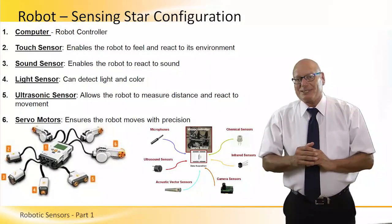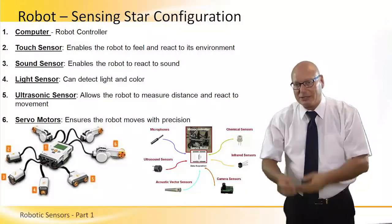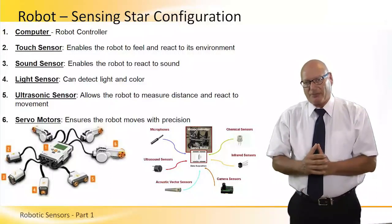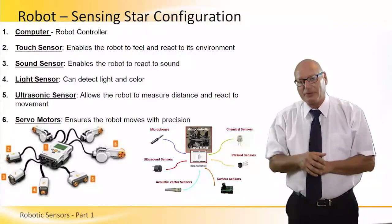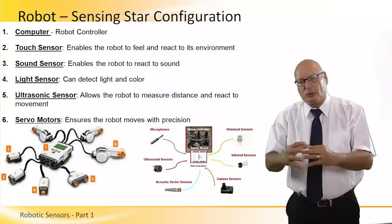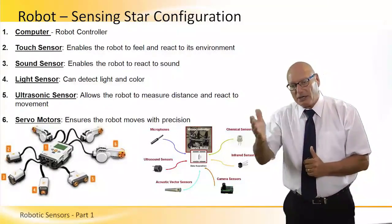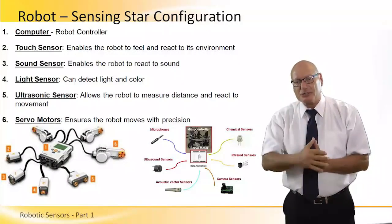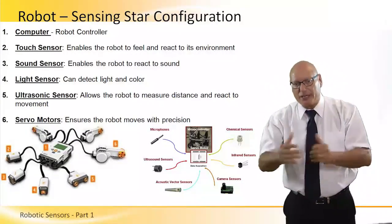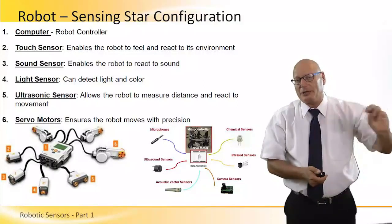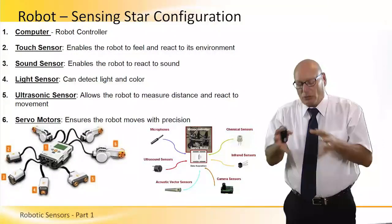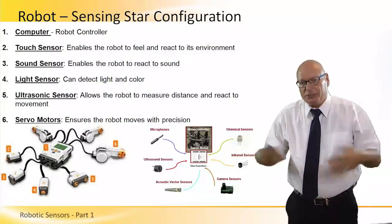We talked about sensors and variations of sensors, but let's now look at some specific sensors and understand what each of them does and how it does it. When we look at the robot from a control point of view, let's look at it as a star. We have the controller at the center, and there are sensors all around it providing data to the controller so it makes decisions on what to do next. There are different types of sensors — touch sensors enable the robot to feel and react to its environment, sound sensors, light sensors — there's a long list. We're going to go into each of them to explain how they work and their applications.